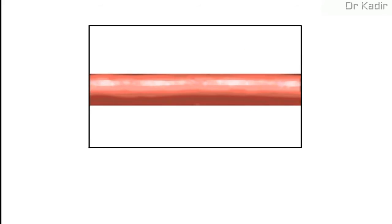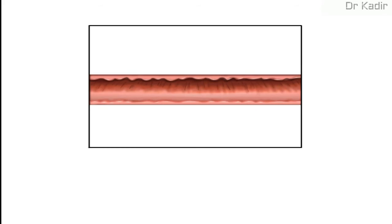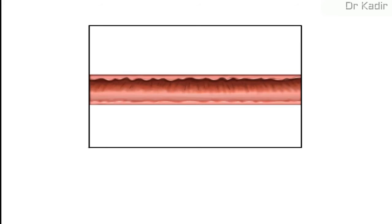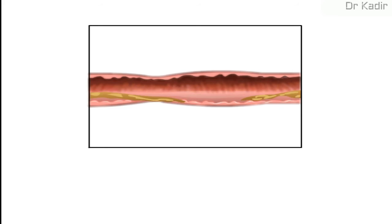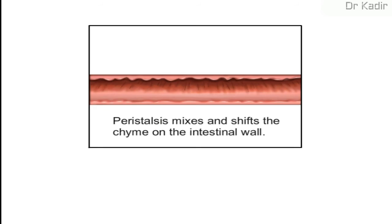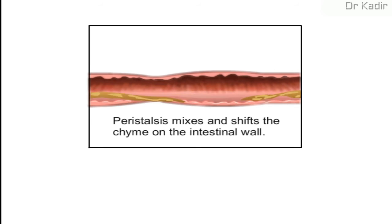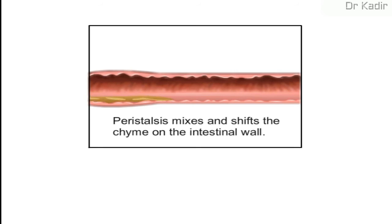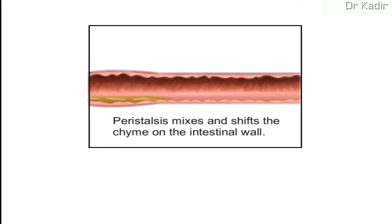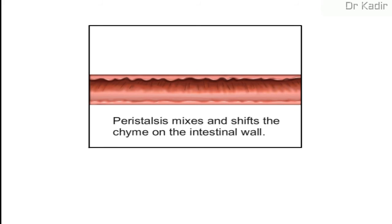Stretching out a piece of intestine will make it easier to see the wave-like motion. The motion mixes and shifts the chyme back and forth. This lets the bloodstream absorb nutrients through the walls of the small intestine.